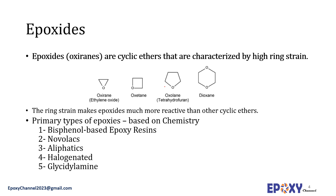Epoxies are cyclic ethers which have a ring and an ether linkage — the C-O-C linkage. These are characterized by high ring strains. The ring strains make epoxides much more reactive than other ethers. And when the size of the ring is bigger — an expanded ring, for example — this strain is less and so the reactivity is also less.